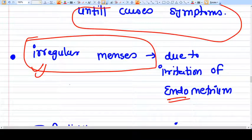Any object that irritates or continually touches the endometrium will cause irregular menses. The same happens with intrauterine contraceptive device (IUCD). IUCD does the same thing, and that's why the side effect of IUCD is irregular menses.